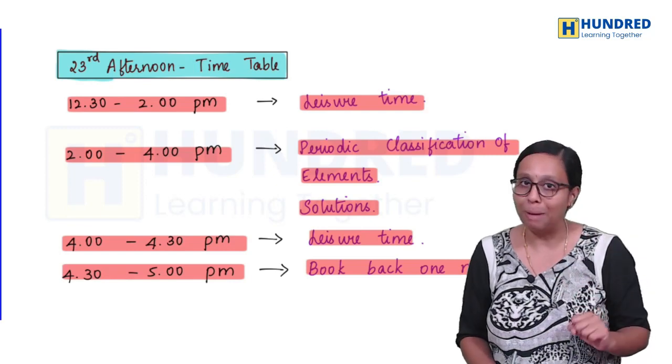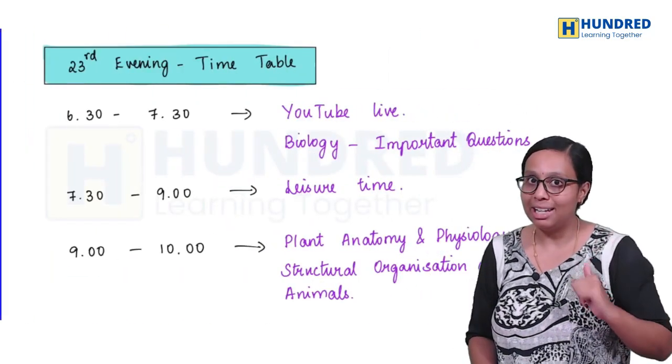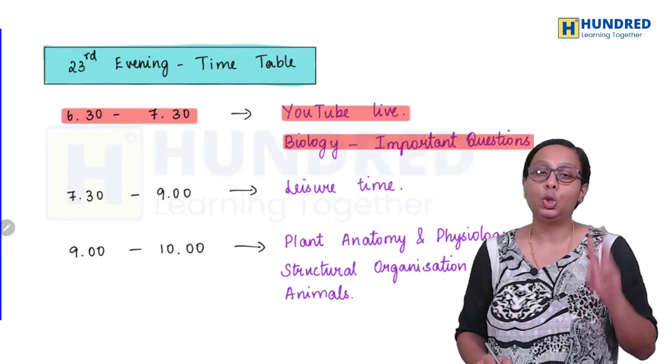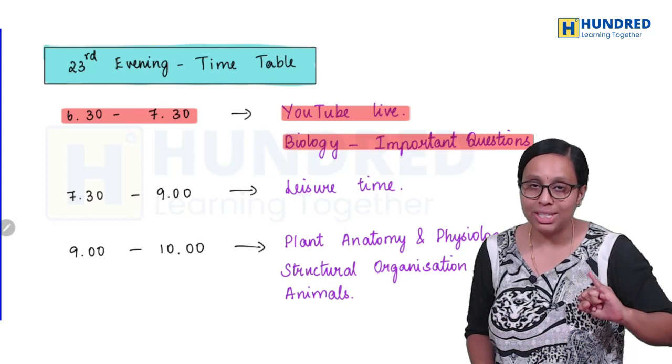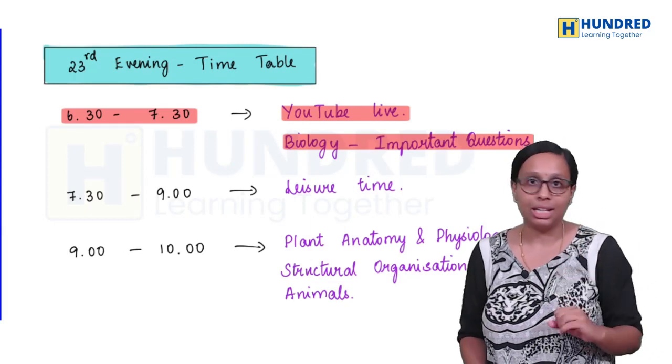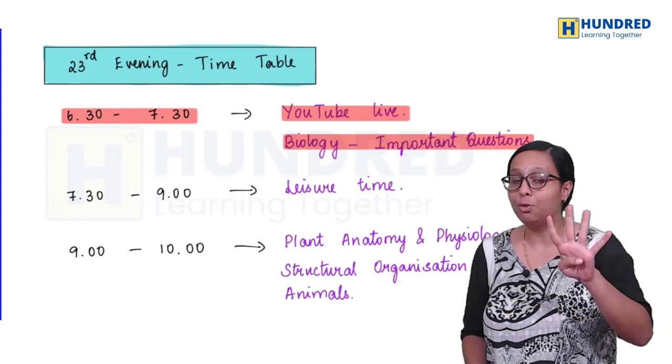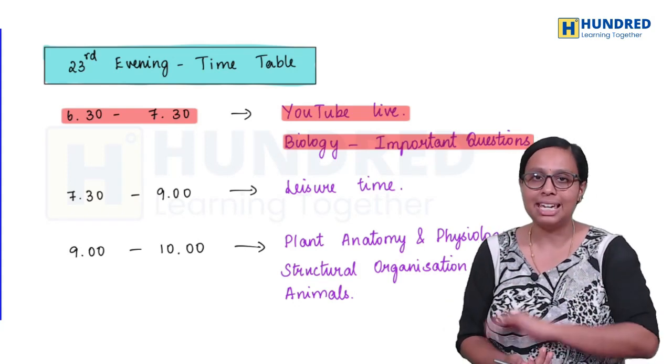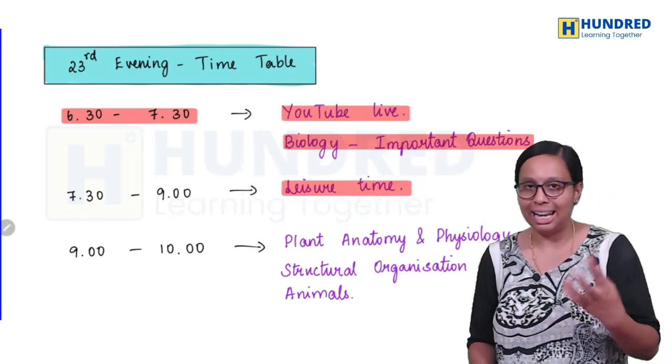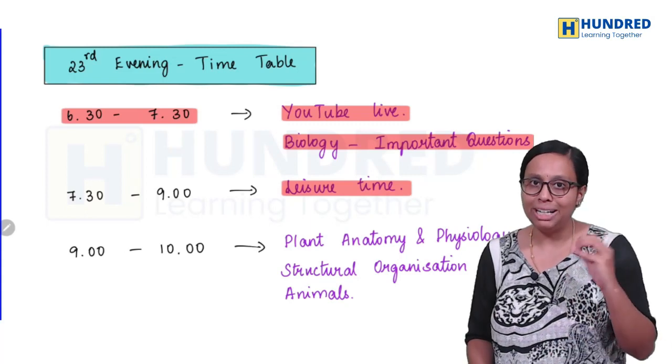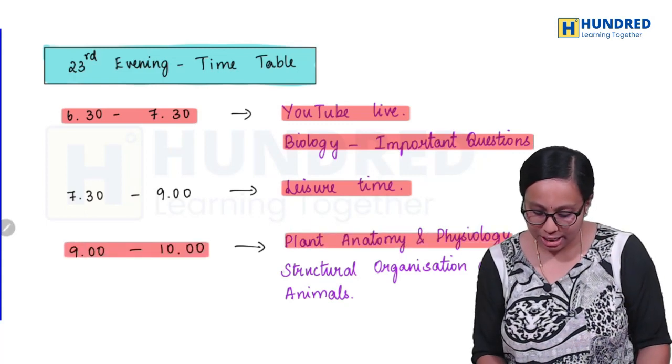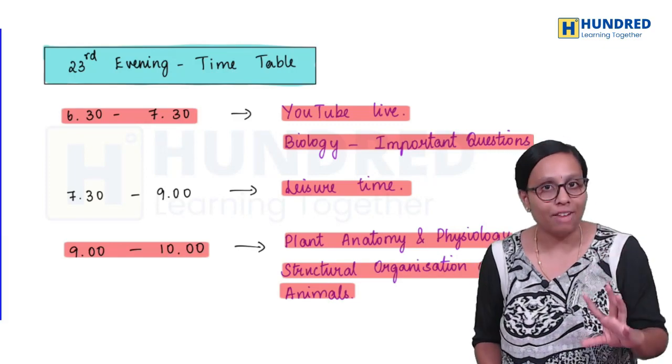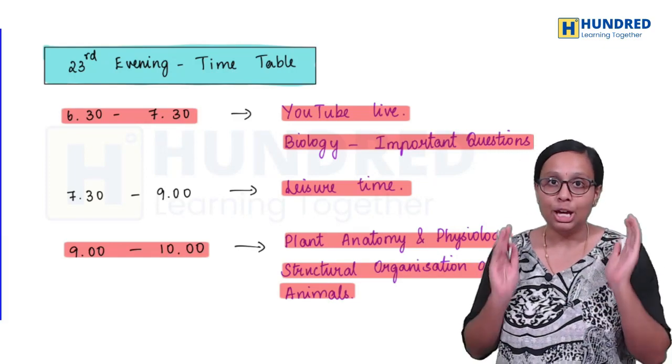We are done with physics and chemistry. Next biology. Asha ma'am's YouTube live, 6:30 to 8:30. Biology important two marks and four marks revision. Ma'am already covered one marks revision, seven marks important last week. In one hour, two marks four marks. Just be present for the live. Two marks four marks is easy to study. Then take a break, have your dinner, relax. 9 to 10, plant anatomy and physiology, structural organization of animals. Already midterm, so just recall, revise book back questions.